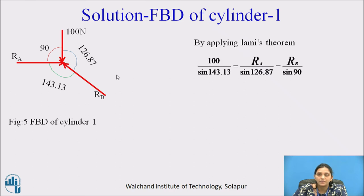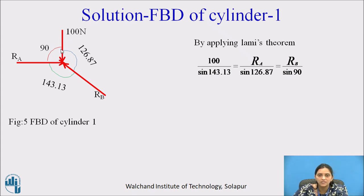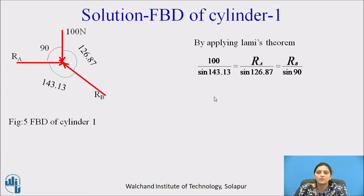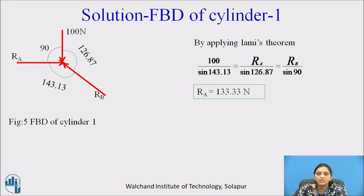Applying Lami's theorem — the ratio of each force to the sine of its opposite angle is constant — we get: 100 / sin(143.13°) = RA / sin(126.87°) = RB / sin(90°). Solving this equation gives RA = 133.33 Newton and RB = 166.66 Newton.